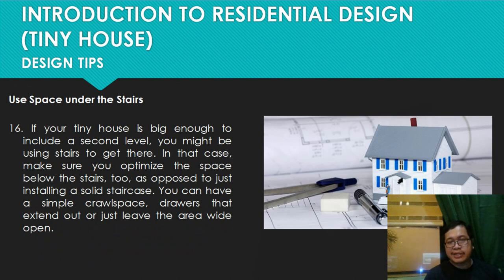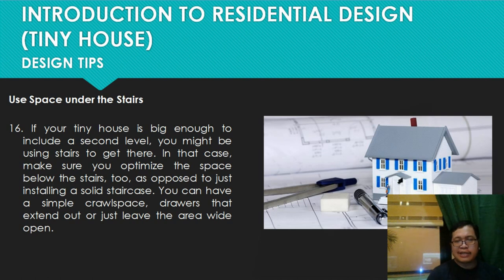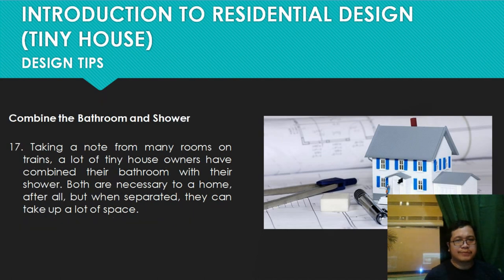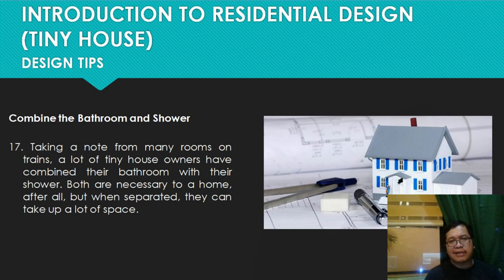Number sixteen: use the space under the stairs. If your tiny house is big enough to include a second level with stairs, make sure you optimize the space below them. Instead of a solid staircase, you can have a crawl space, drawers that extend out, or just leave the area wide open. Number seventeen: combine the bathroom and shower. Taking a note from rooms on trains, many tiny house owners have combined their bathroom with their shower. Both are necessary to a home, but when separated, they can take up a lot of space.